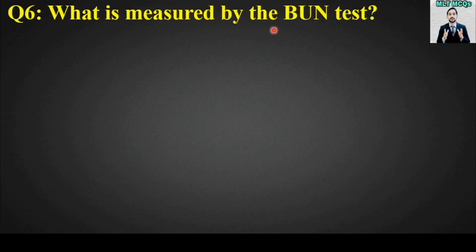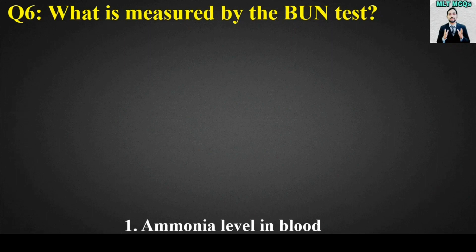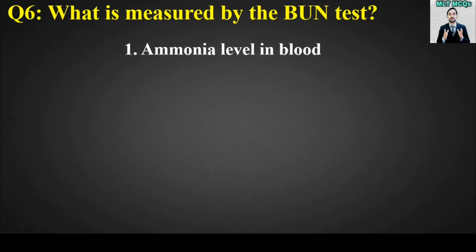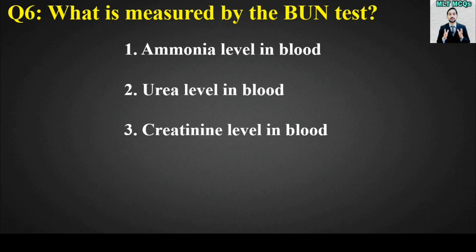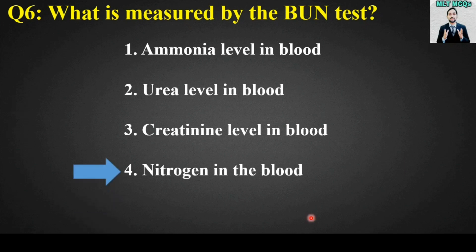MCQ number six: What is measured by the BUN test, which is also called blood urea nitrogen? Options are: ammonia level in blood, urea level in blood, creatinine level in blood, nitrogen in the blood. The right answer is option number four — nitrogen in the blood is measured by the BUN test.